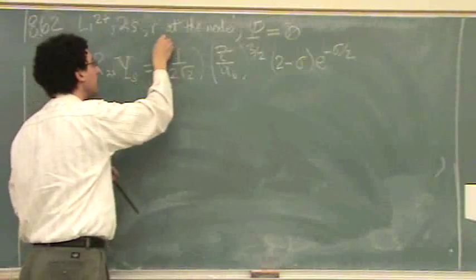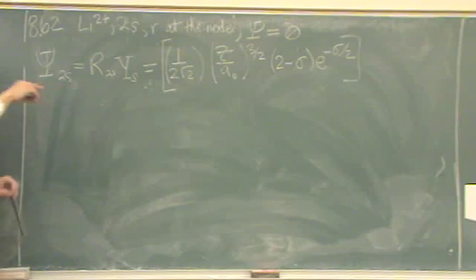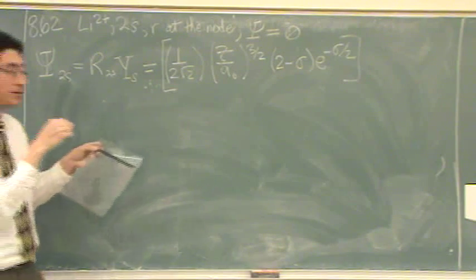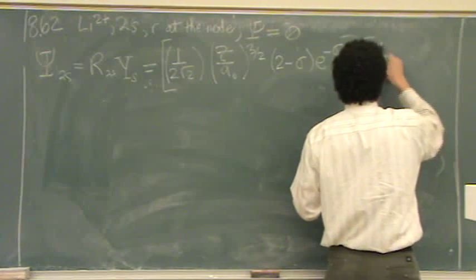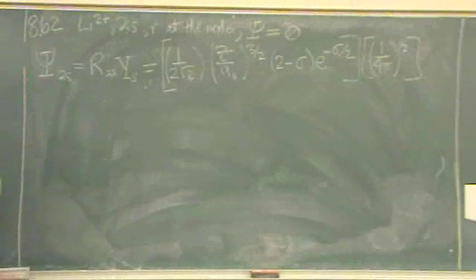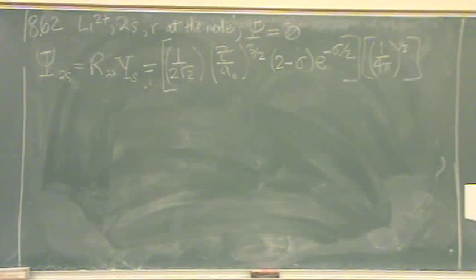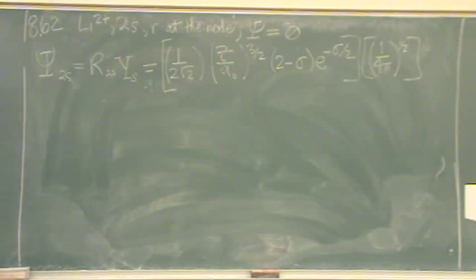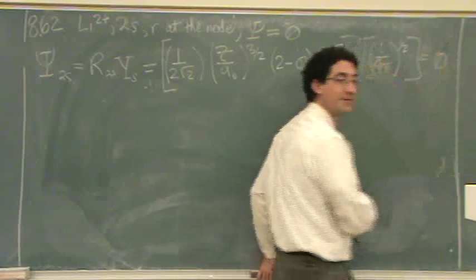I'll put a multiplication sign, and now write the Y part for s — copying straight from the table. The s part is (1/4π)^(1/2). So the first bracket term is the radial part of the wave function, copied exactly, and the second part is the Y part. I'll set the whole expression equal to zero — not phi, but zero.